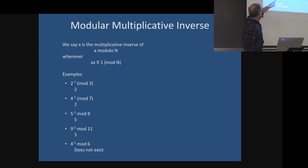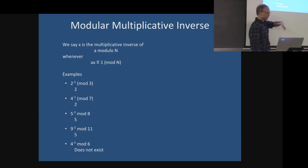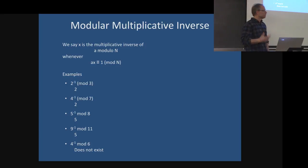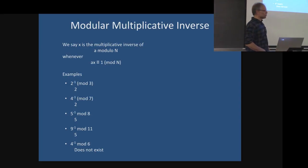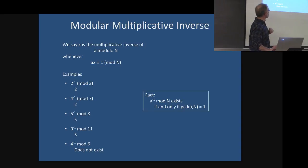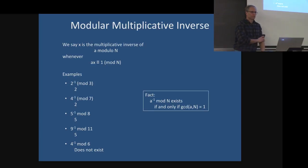We also saw that sometimes the inverse does not exist. In fact, it doesn't exist if these two numbers are relatively prime — like they are here, there is an inverse. If they are not relatively prime, in other words they have a factor in common other than 1, there is no inverse.